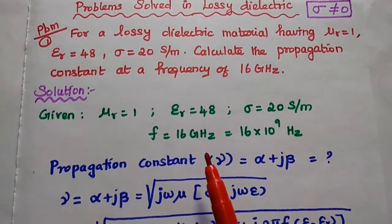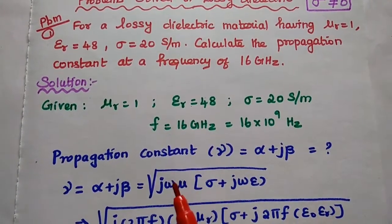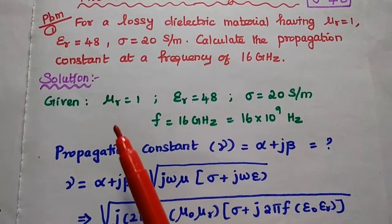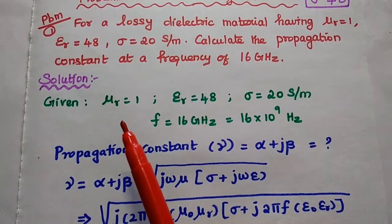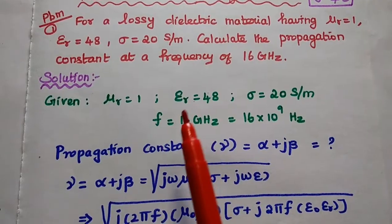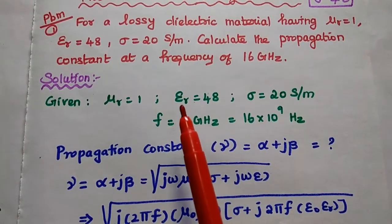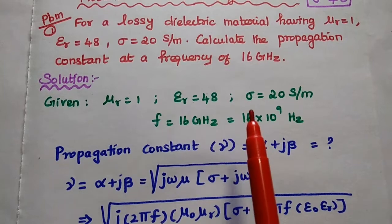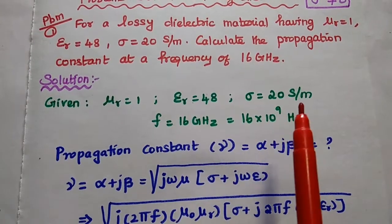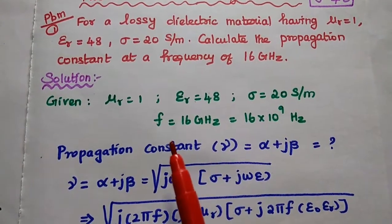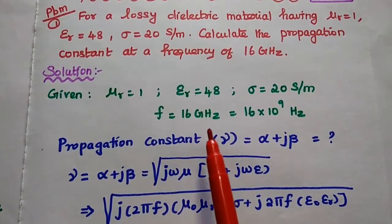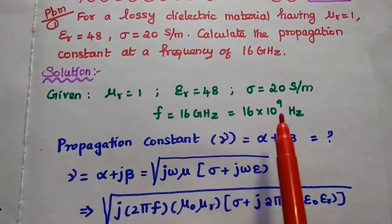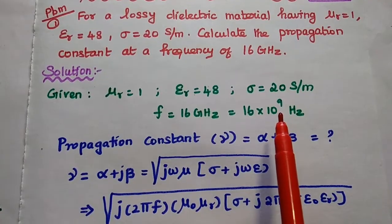In the solution part, first we have to write the given data. The relative permeability mu r is equal to 1, the relative permittivity epsilon r is equal to 48, the conductivity of the material is 20 siemens per meter, and the operating frequency is 16 gigahertz, that is 16 into 10 to the power 9.